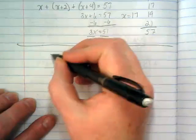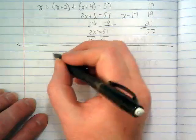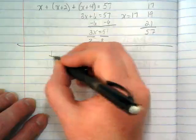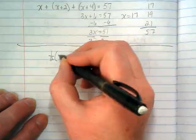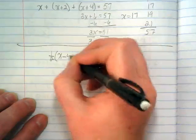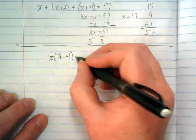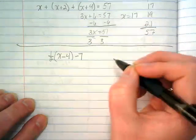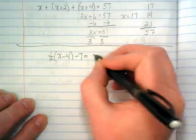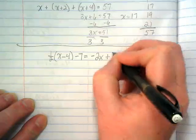You'll have some time tomorrow to watch the videos and get caught up with what we did earlier. I'd like you to write down the problem: one half in front of a parenthesis with x minus 4, and then outside the parenthesis minus 7, equals negative 2x plus 6.